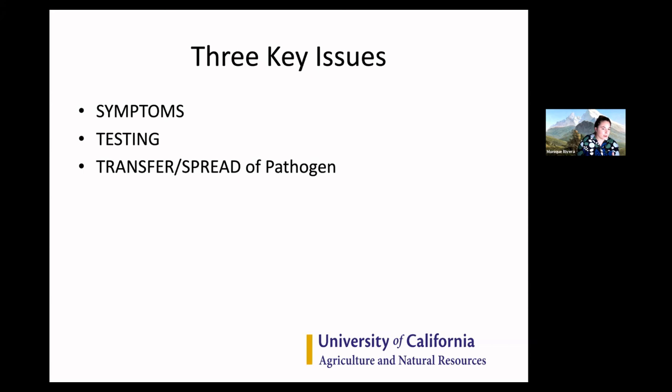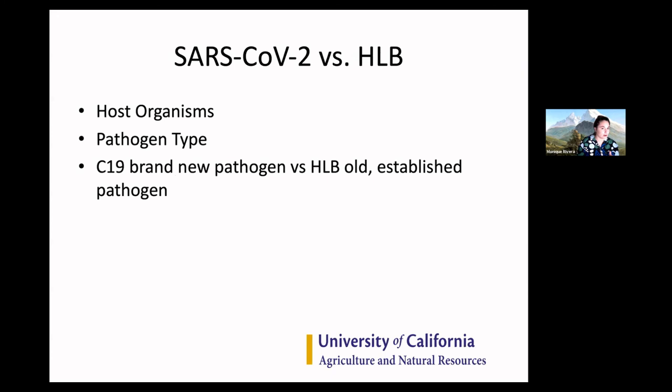With the epidemic in your backyard and the pandemic that we're going through as humans, there are really three key issues. The first is symptoms — what defines symptoms of a disease and how do you recognize it? Then there's testing — you need effective testing to determine what has the disease and what doesn't. The biggest concern going forward is always transfer and spread of the pathogen: how does it move and how can we prevent it and protect ourselves and our citrus trees?